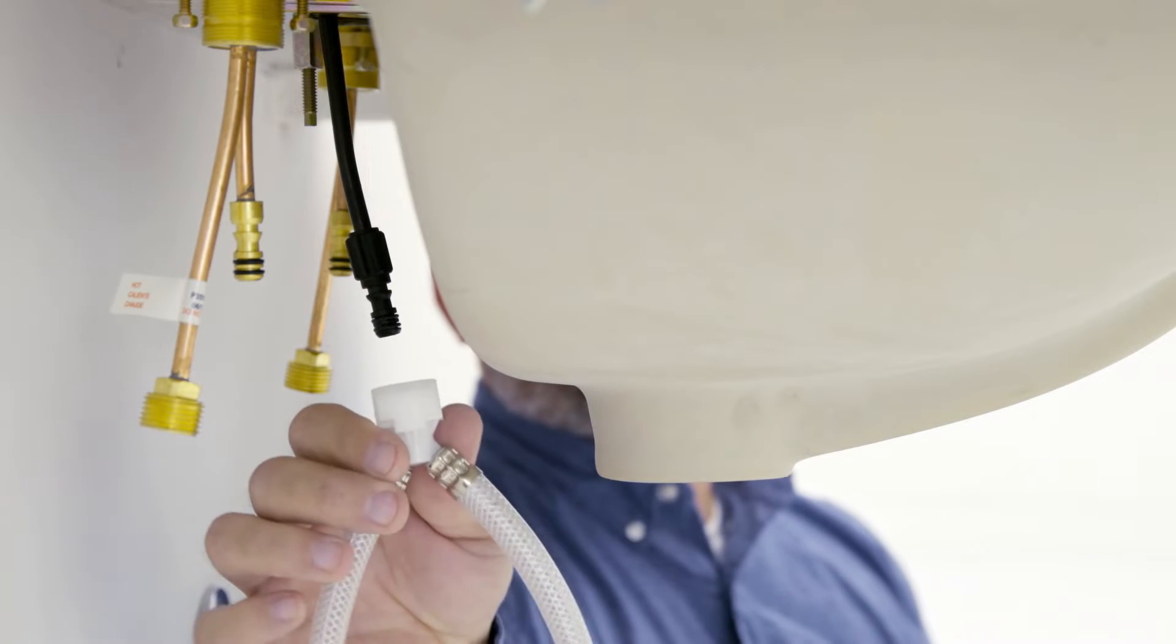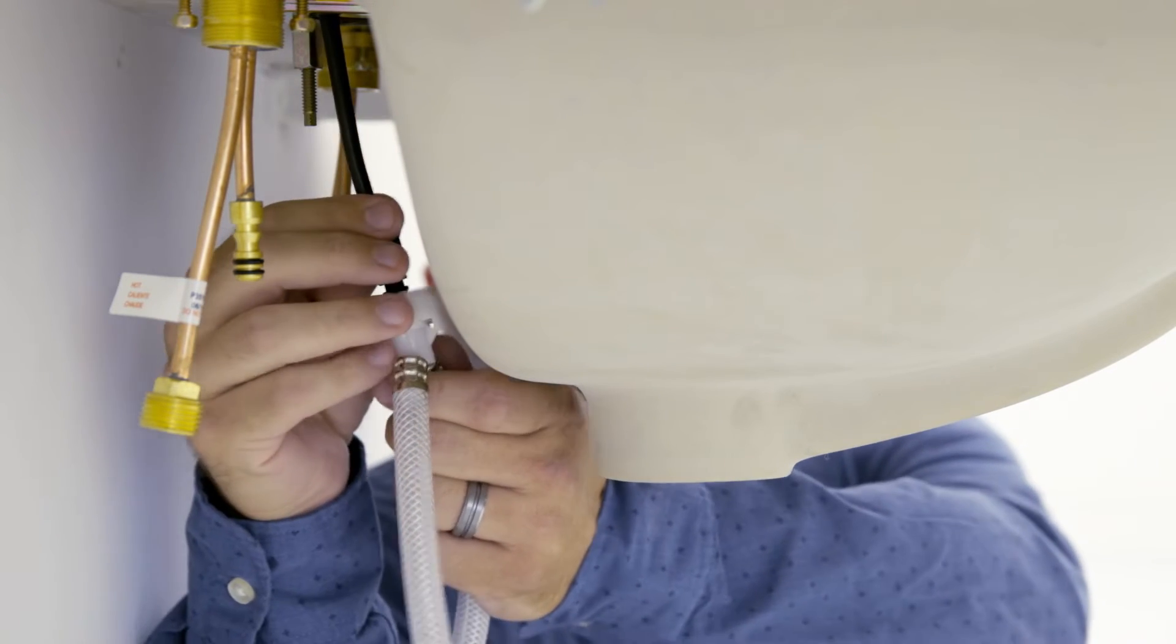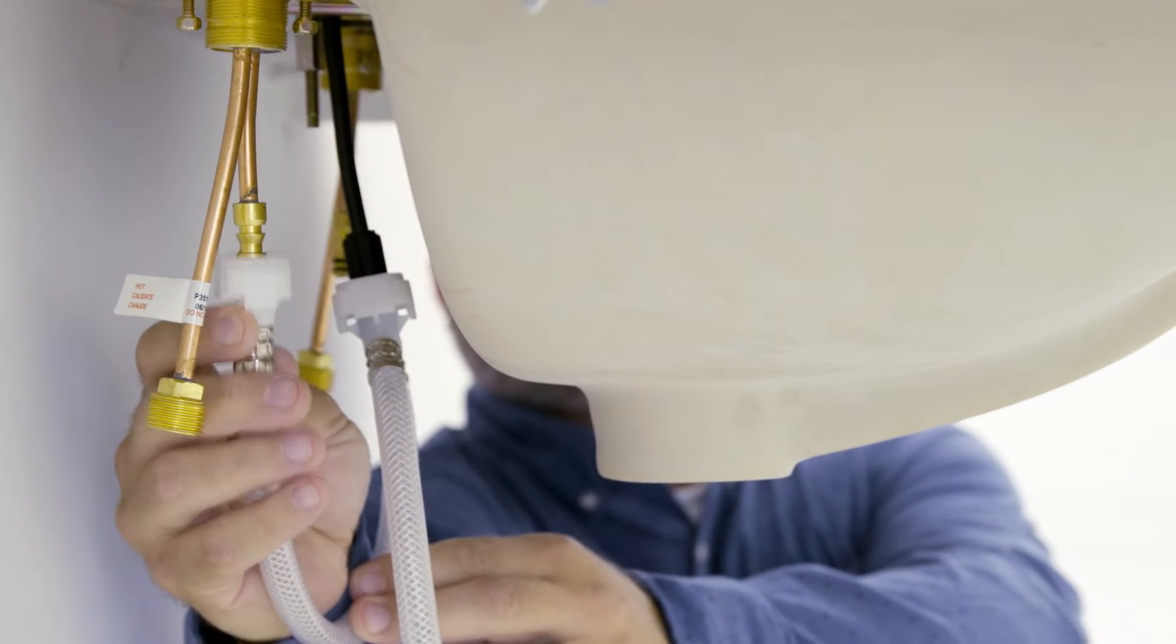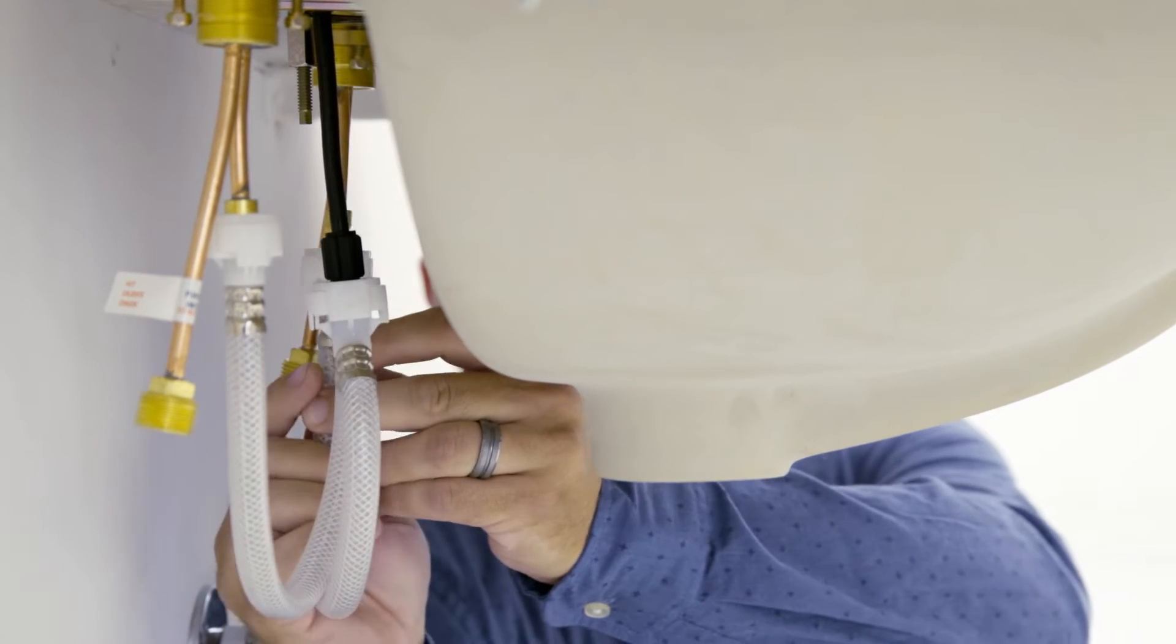Locate the quick connects and align the tabs with those on the spout and valves. Push the quick connects firmly upwards and snap them onto the tube connectors for the spout and each valve. Pull down lightly to ensure each connection has been made.